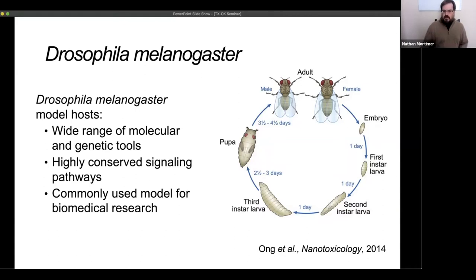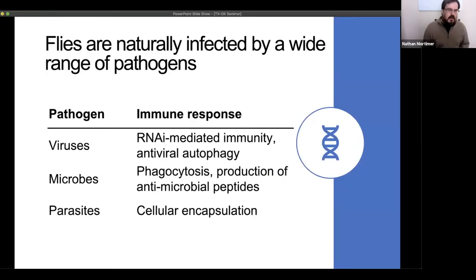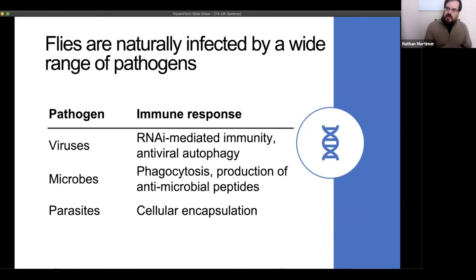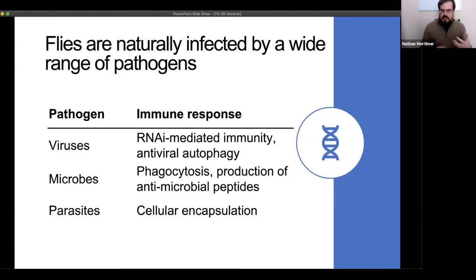Everything happens as the organism is developing — they're getting infected and fighting off infection. Flies are great for studying immune responses because they get infected by the same range of pathogens that we do and mount pretty conserved responses. Their antiviral immunity looks quite similar to ours, as does antimicrobial immunity. They also get infected by parasites, and when infected, the immune response is driven by immune cells. I'm particularly interested in understanding what's happening in those cell types — that's the system we focus on.